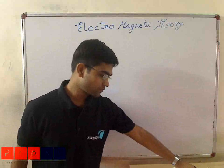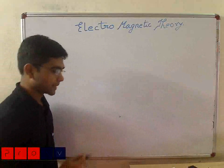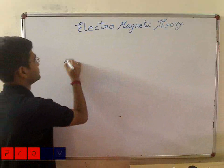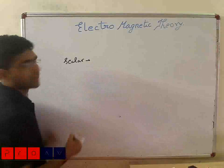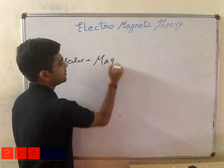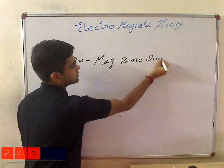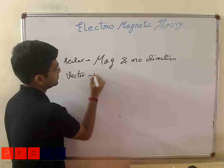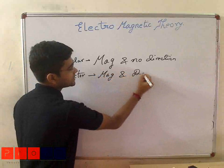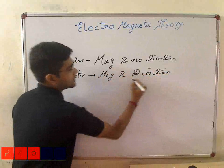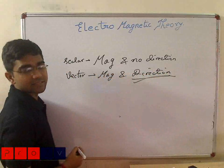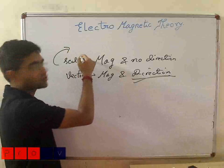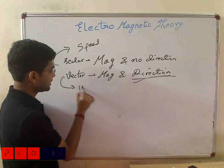First of all, what is a scalar quantity? A scalar quantity has magnitude and no direction. What is a vector? It has magnitude as well as direction. For example, the first thing that comes to mind for scalar is speed, and the example of a vector is velocity.